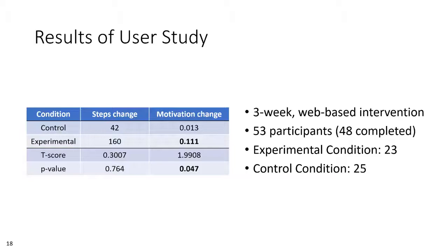Results are shown in this table, where participants in the control group saw an average of 42 extra steps on the days of their sessions, compared to 160 extra steps for participants in the experimental group. This was not found to be significant, but it perhaps represents a trend. However, the change in motivation before and after the comparison activity did demonstrate a statistically significant difference in favor of the experimental group.